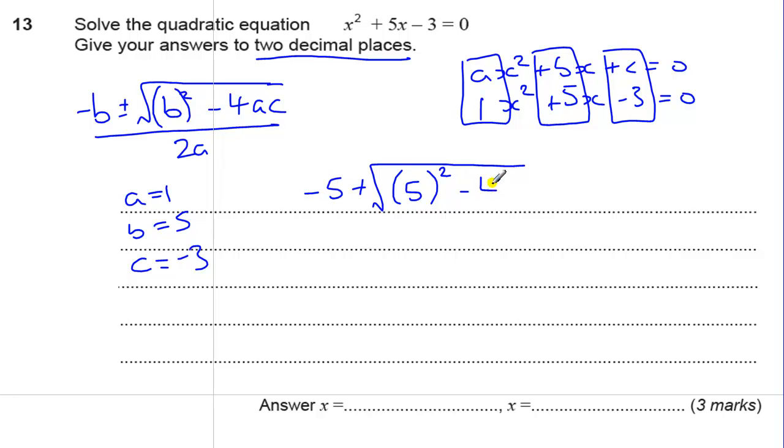So, 5 squared minus 4 times a, which is 1, times minus 3. If you type that in as that on your calculator, you should have no problems. And then we've got to divide by 2 times 1.